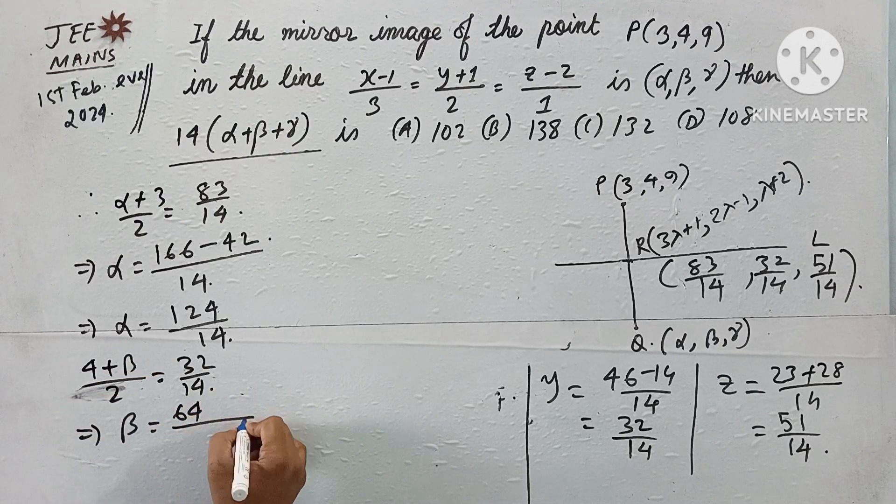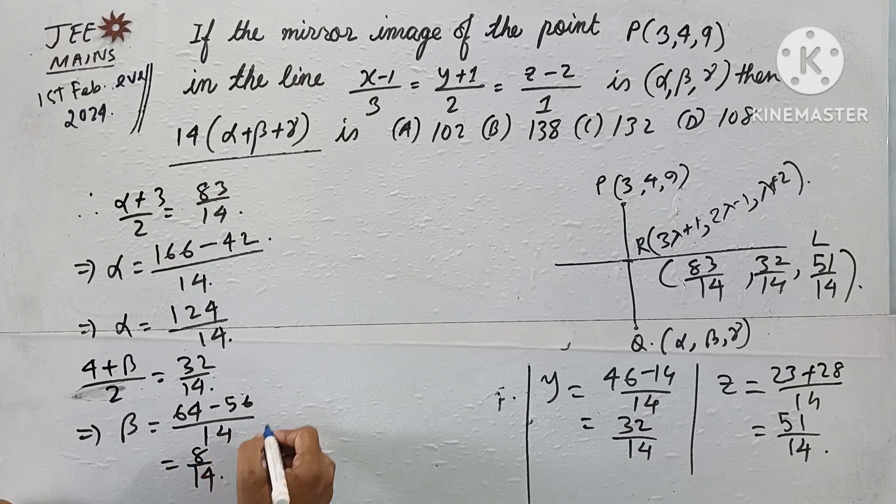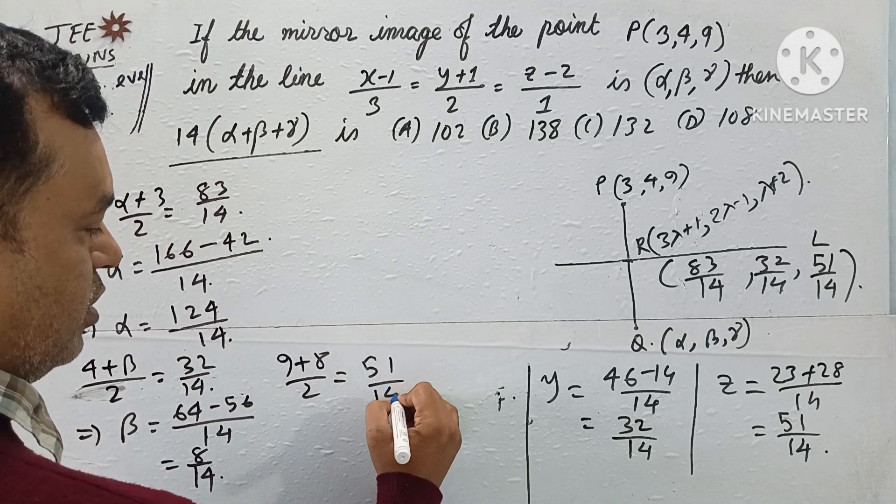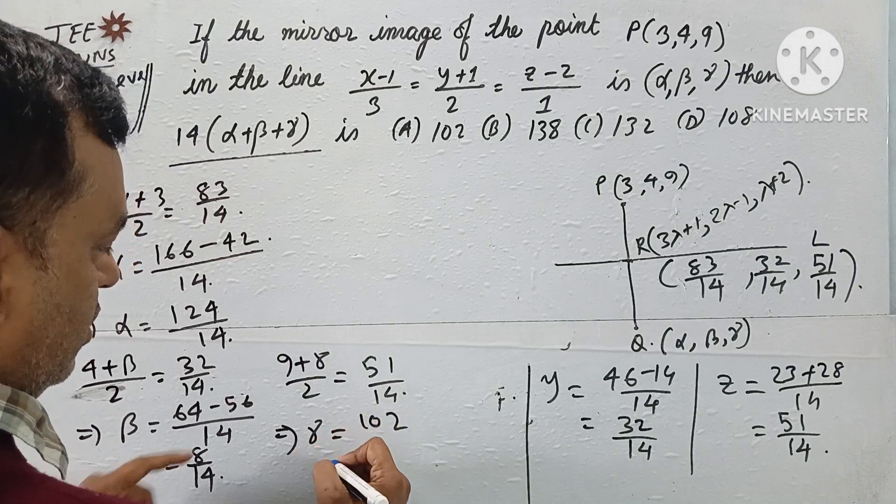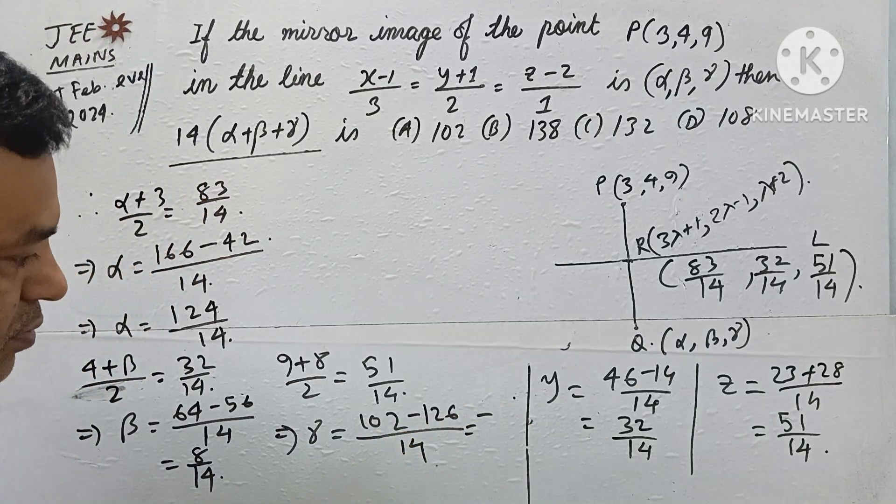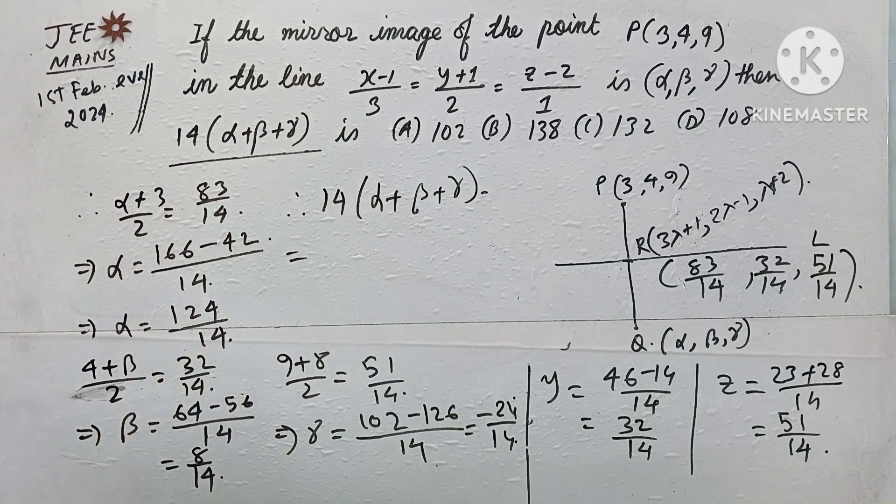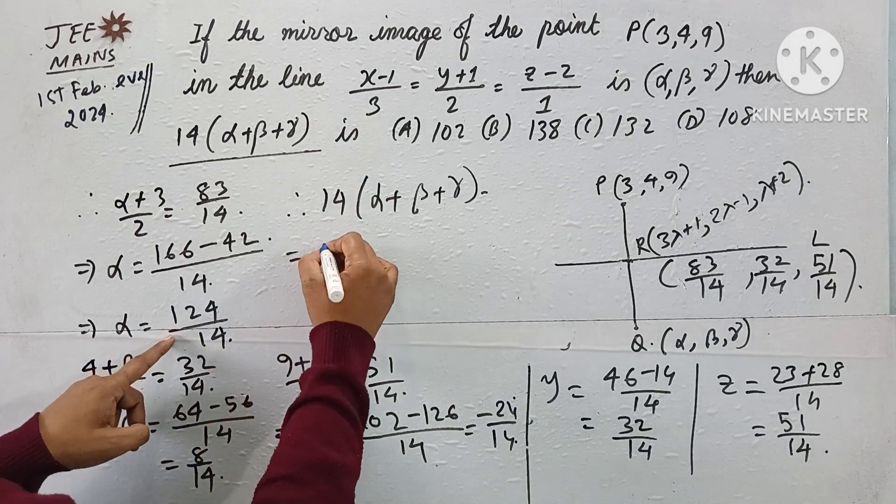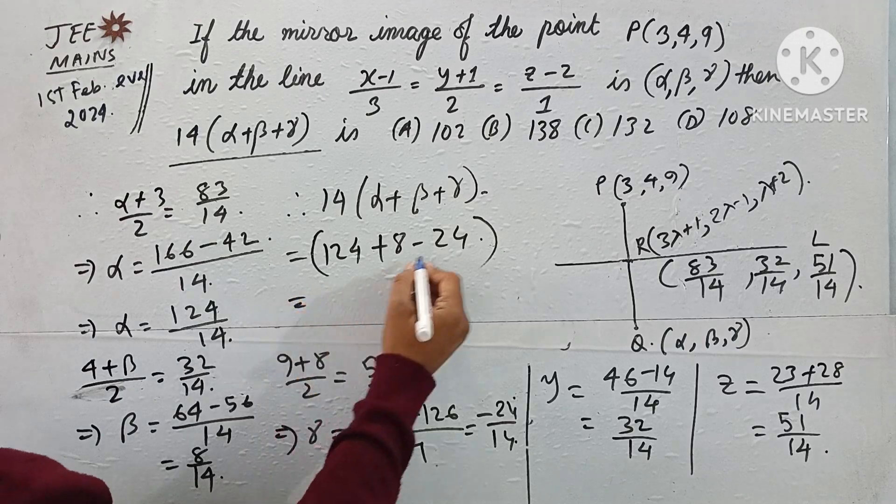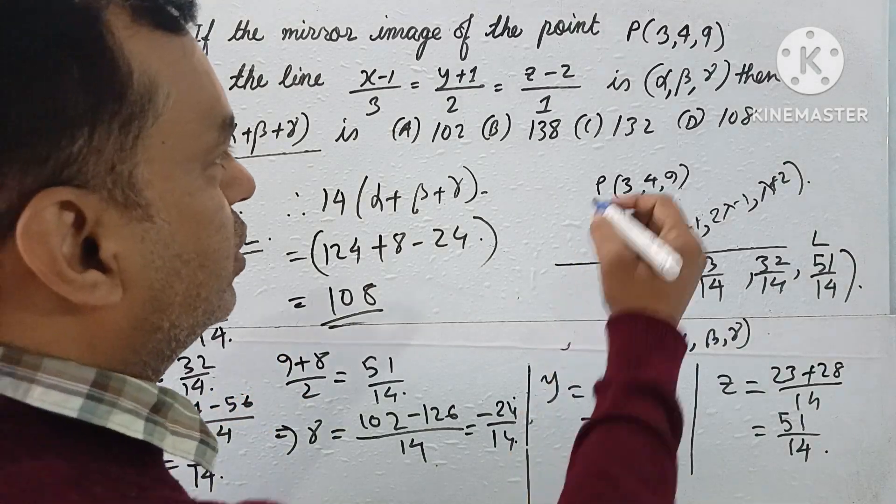Next, (9+γ)/2 = 51/14, so γ = 102/14 - 126/14 = -24/14. Therefore 14α + β + γ = 14(124/14) + 8/14 - 24/14 = 124 + 8 - 24 = 108. So 14α + β + γ = 108, which is option D.